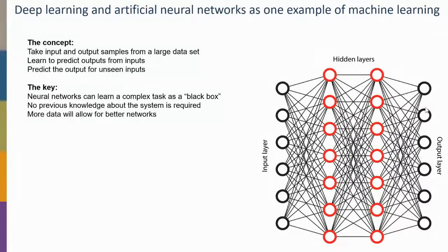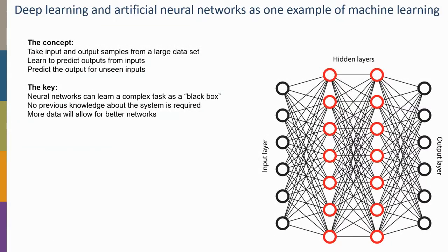An important difference between deep neural networks and simpler machine learning algorithms like linear regression is that for deep neural networks you can increase complexity to any level. The more data you have, the better the solution, because you can build more complex network structures — adding more hidden layers creates a deeper neural network. If you have gigabytes of data you work with a certain complexity; with terabytes you can increase complexity and get better solutions.